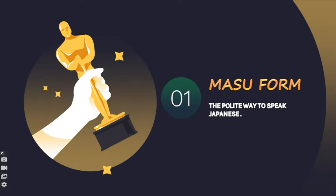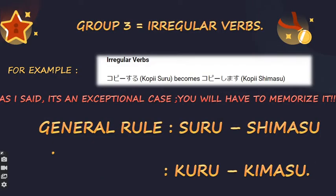Masu form is the polite way to speak Japanese. For group 3, the irregular verbs, suru becomes shimasu and kuru becomes kimasu. For example, 'kopii suru' becomes 'kopii shimasu.' You simply need to memorize that suru will become shimasu and kuru will become kimasu — the polite forms of 'to do' and 'to come.'